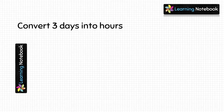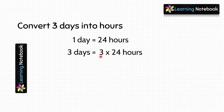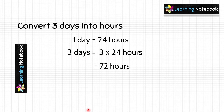Question: convert three days into hours. We just learned that one day equals 24 hours, so three days would be equal to three multiplied by 24 hours. Three into 24 equals 72, so this means three days equals 72 hours.